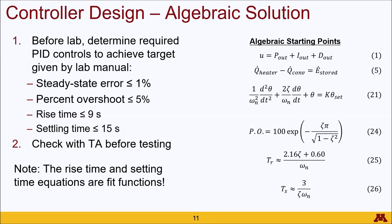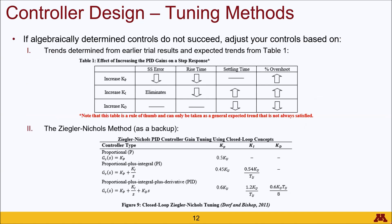If your algebraically determined control does not succeed, enter an iterative process where you adjust your control based upon the trends determined from earlier trials as well as the expected trends found in Table 1 of the lab manual. If this does not work and you're running out of time, you can use the Ziegler-Nichols method as a backup. This involves operating the PID control system where KU corresponds to the KP you plugged in from your previous control system, and TU refers to the period of oscillation within your temperature versus time profile.